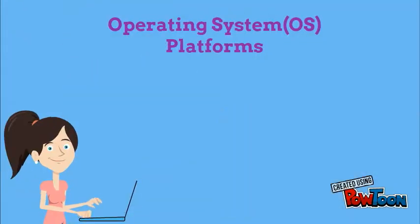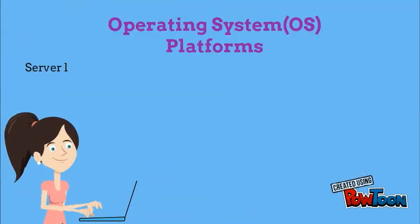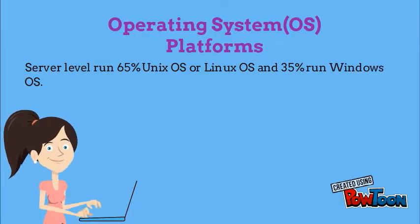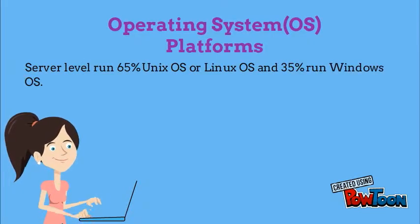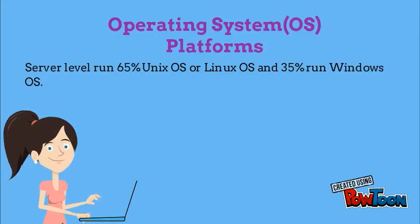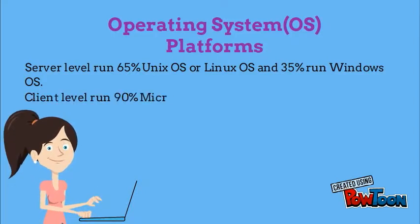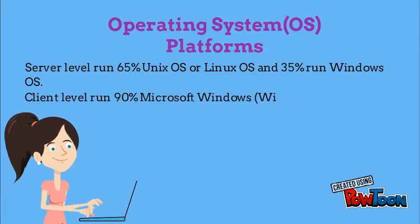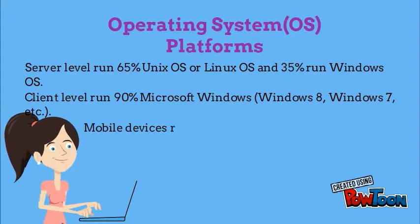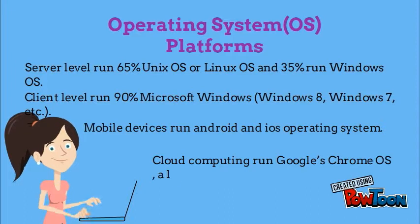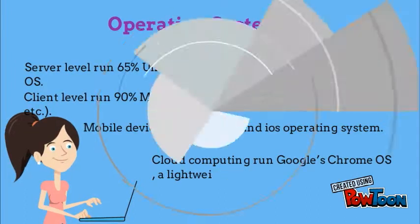For OS platforms: at the server level, 65% run Unix or Linux and 35% run Windows. Unix and Linux can run on different types of processors. At the client level, 90% run Microsoft Windows. Mobile devices run Android and iOS. Cloud computing runs Google's Chrome OS.